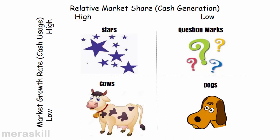The business units which are in the first quadrant of high market share and high growth — these are the star performers. While they have a high market share and therefore generate a lot of cash, they also require a lot of investment. They have high cash usage because we need to reinvest and invest in the growth of this particular industry.